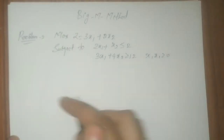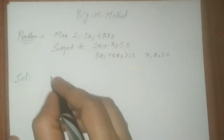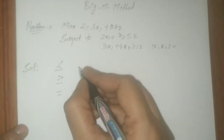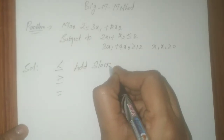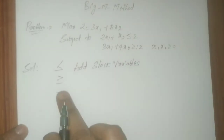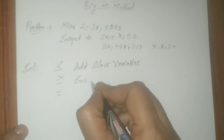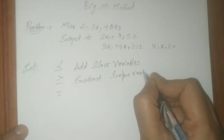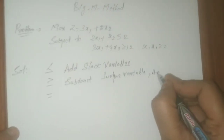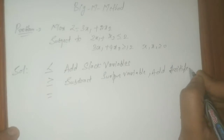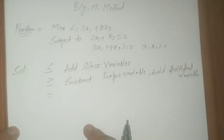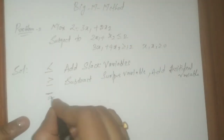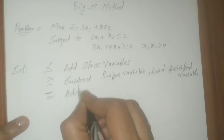In the Big M method, the first step is to analyze the inequalities. We have three cases: when it is less than or equal to, add a slack variable; when it is greater than or equal to, subtract a surplus variable and also add an artificial variable to convert the inequality to an equality constraint; when you have an equality in the constraint, just add artificial variables.